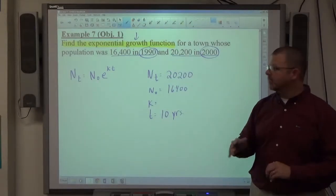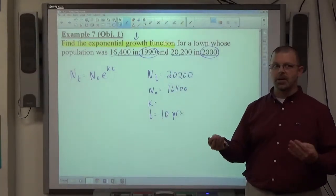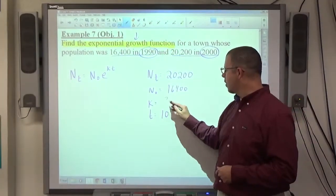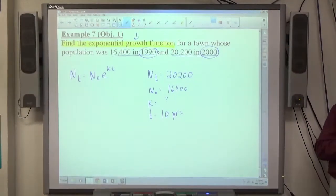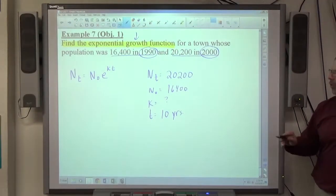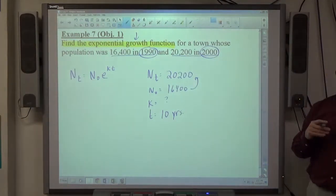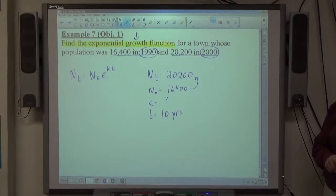What we don't know is K. There's four variables. Anytime you get four variables, they're going to give you three. You have to find the fourth. If there's five, they're going to give you four. You have to find the fifth. So K is what we need to find out. K is called the growth constant. And I know it's a growth constant because the population grew. If the population decreased, it would be a decay function, or a decay constant.